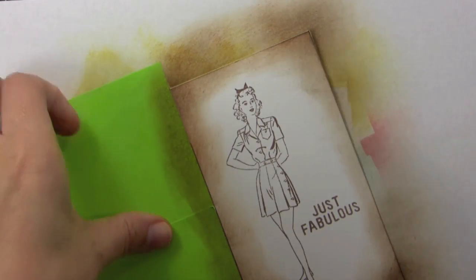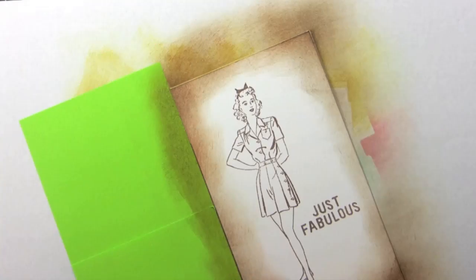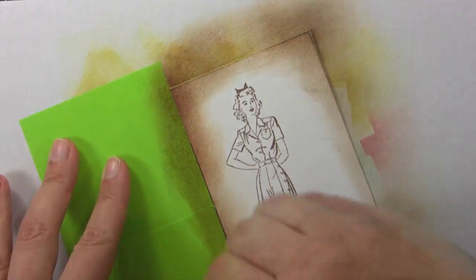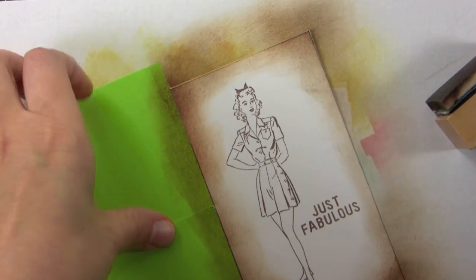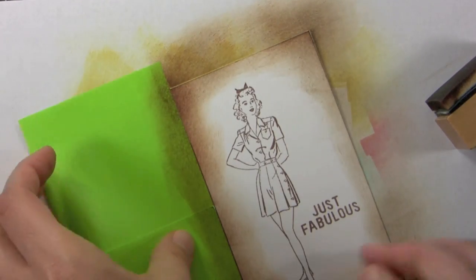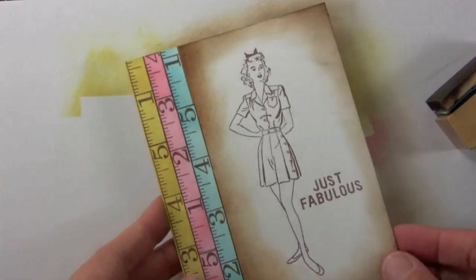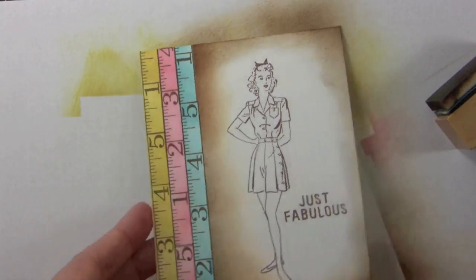Then for the last step before removing the mask, I'm going to take the darkest brown, which is the walnut stain, and go right along the edge, right where the post-it note is. And now let's peel that back and see how it looks. That looks pretty good.